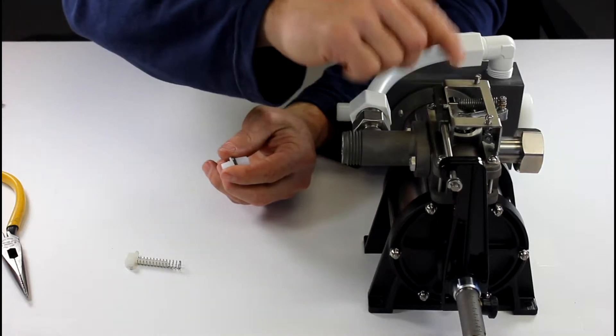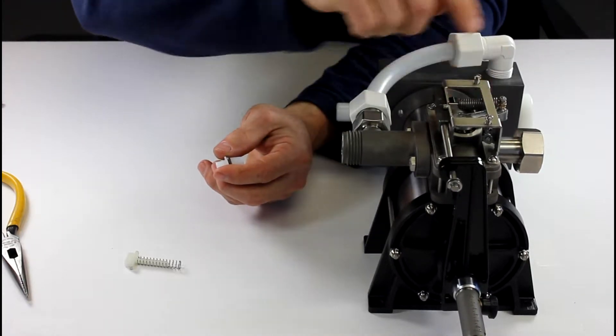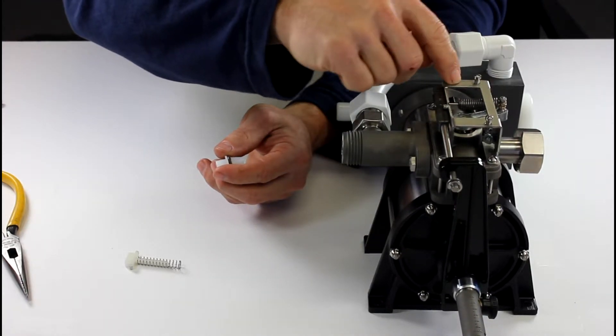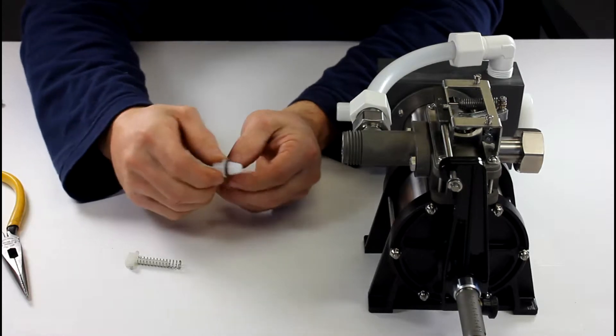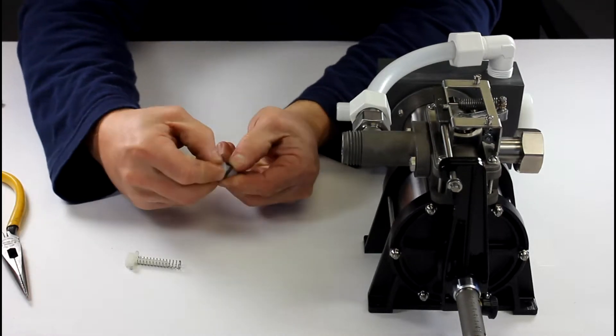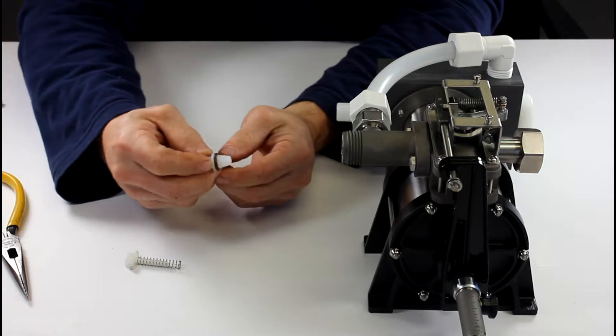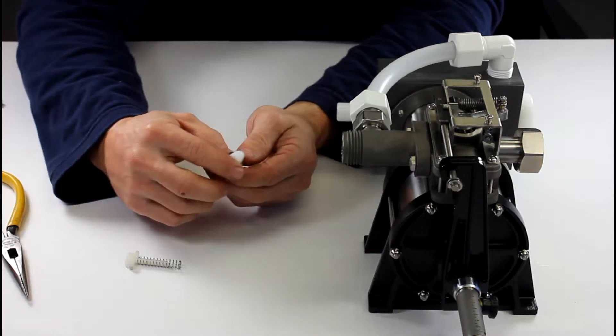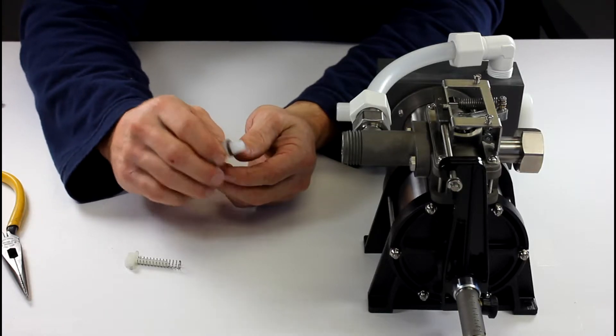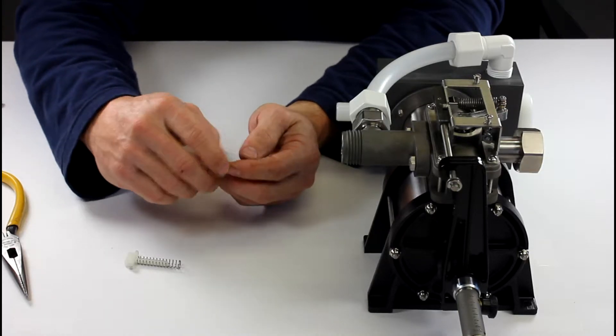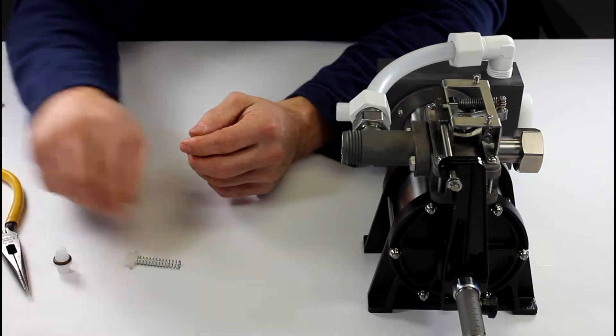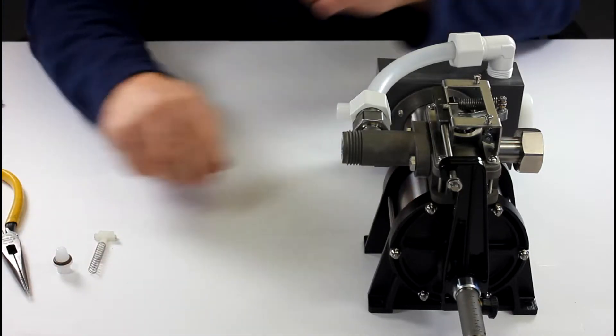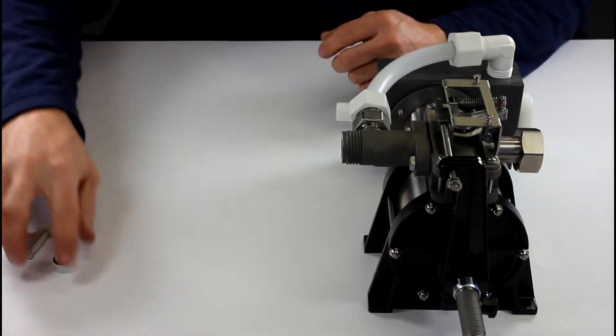This o-ring sits inside there and that's what seals your chemical coming through your outlet fitting. That's what seals it from your valve block in your water motor, which you don't want chemical going into there at all. You can replace this by pulling it off and checking if it's swollen or cut.